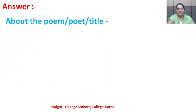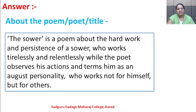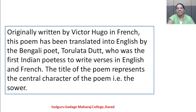About the poem, poet and title: 'The Sower' is a poem about the hard work and persistence of a sower who works tirelessly and relentlessly, while the poet observes his actions and terms him as an august personality who works not for himself but for others. Originally written by Victor Hugo in French, this poem has been translated into English by the Bengali poet Toru Lata Datta, who was the first Indian poetess to write verses in English and French. The title of the poem represents the central character, that is the sower.